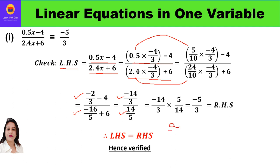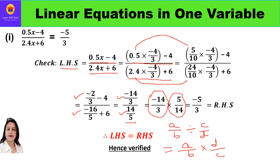We now have a fraction divided by a fraction. Remember: to divide fractions, multiply by the reciprocal — a/b divided by c/d equals a/b times d/c. Applying this: minus 14/3 times 5/14. The 14s cancel, leaving minus 5/3. This equals the right hand side of the equation, which is minus 5/3. So left hand side equals right hand side — verified.